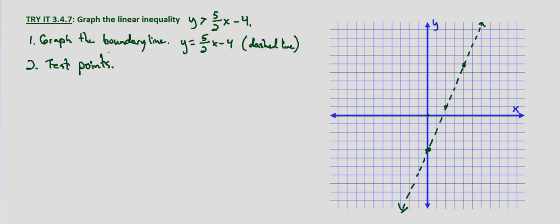substituting it into y is greater than 5 halves x minus 4, is 0 greater than 5 halves times 0 minus 4. And we do get a true statement, 0 is greater than negative 4, because 5 halves times 0 is 0, minus 4 is negative 4.